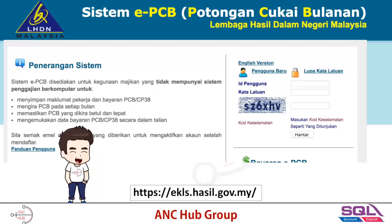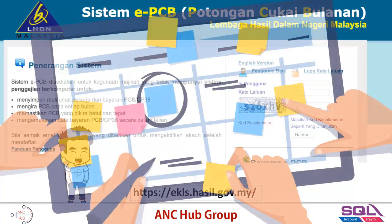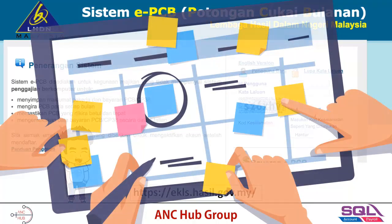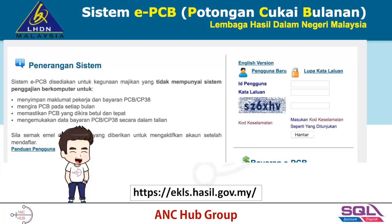When is the best time for you to use the PCB portal? The best time, undoubtedly, will be the January 2019 contribution, which means this month. Why? Because PCB calculation always goes by a 12-month average.